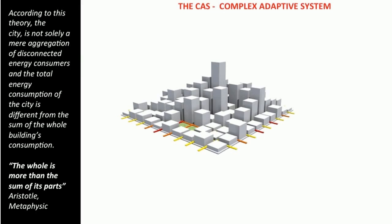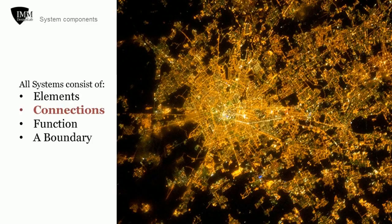In IMM, the city is a CAS — a specific type of complex system with adaptive and resilience ability. It's important to notice that the final performance of a complex system is different than the sum of its heterogeneous elements' performance. The generic morphological subsystems recognized by IMM are: urban build-up, urban void, types of uses, and links. All systems consist of elements, connections, function, and a boundary. However, the key to understanding the city as a complex adaptive system is not its reduction to its parts, but having a deep inquiry into the relationships between parts.